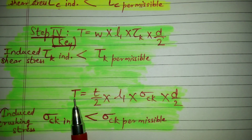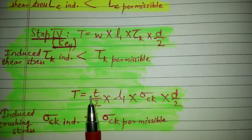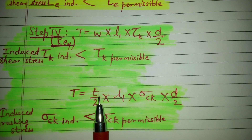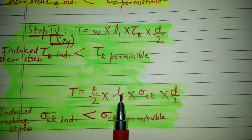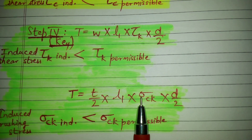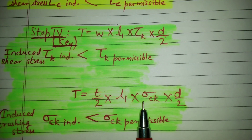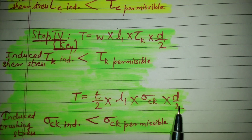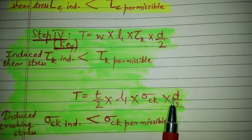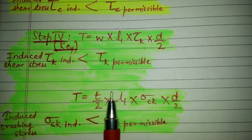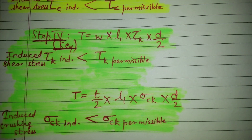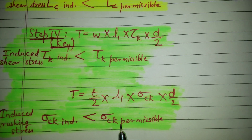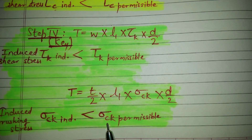We then use another formula: T equals T by 2 into L1, where T is the thickness of the key, multiplied by D divided by 2. From this, we find the induced bearing pressure for the key, which should be less than the permissible bearing pressure for the key.